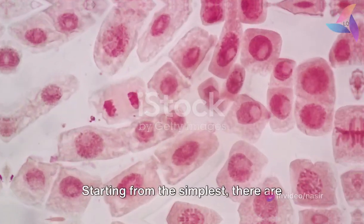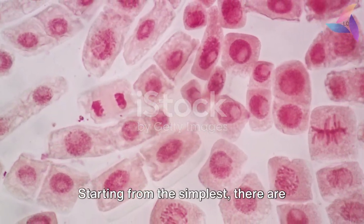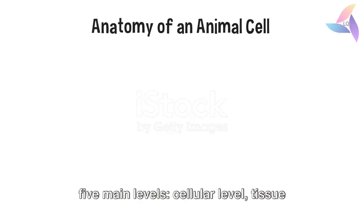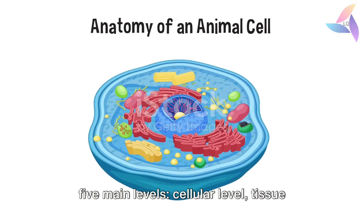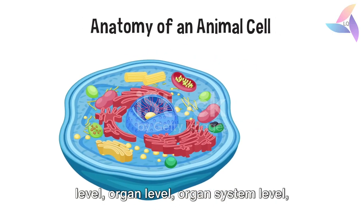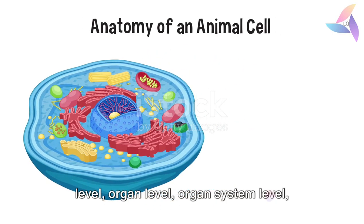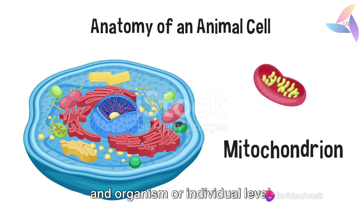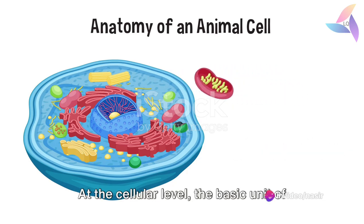Starting from the simplest, there are five main levels: cellular level, tissue level, organ level, organ system level, and organism or individual level.